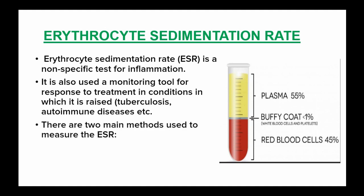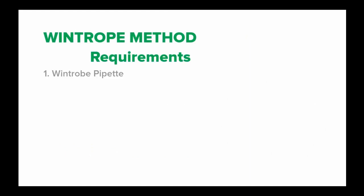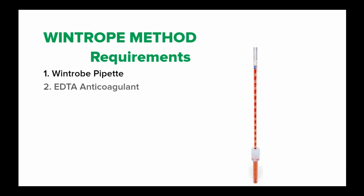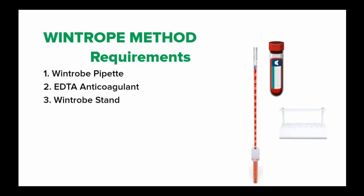There are two methods of measuring the erythrocyte sedimentation rate: the Westergren method and the Wintrobe method. In the Wintrobe method, you require a Wintrobe pipette, an EDTA anticoagulant, and a Wintrobe stand.